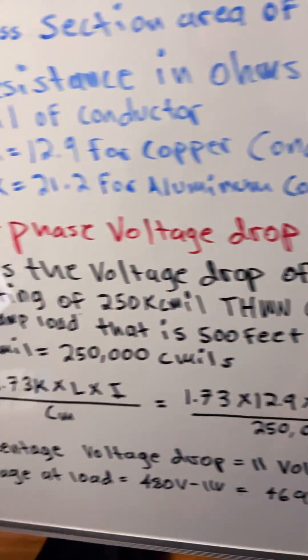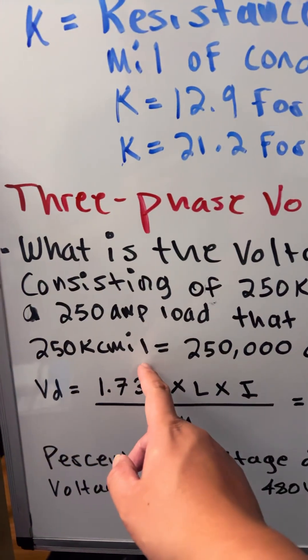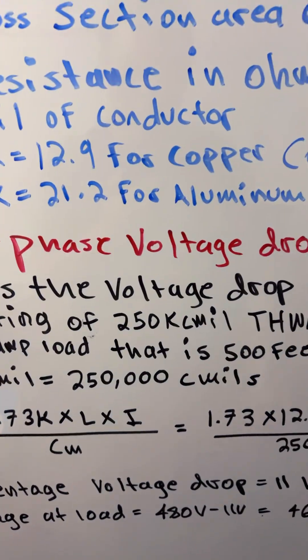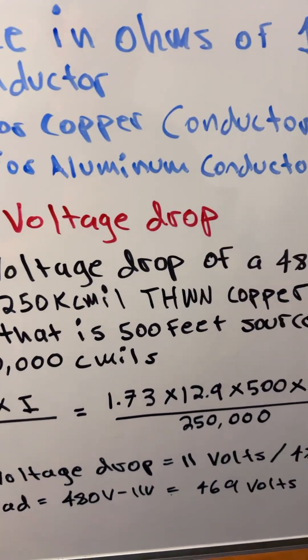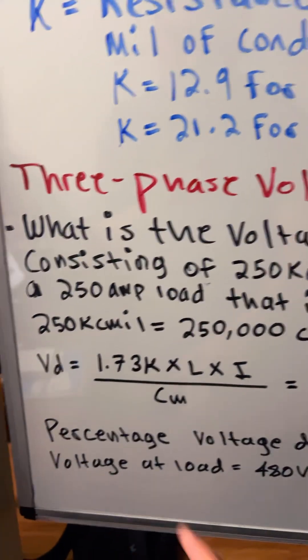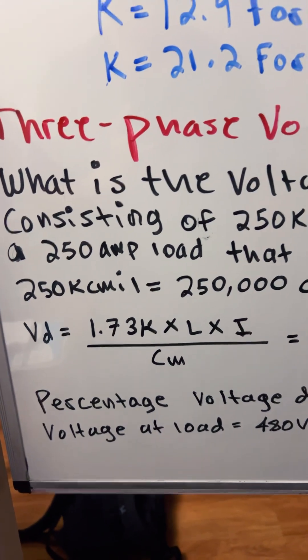So 250 kcmil equals 250,000 circular mills. So here's the formula for the voltage drop for three-phase: